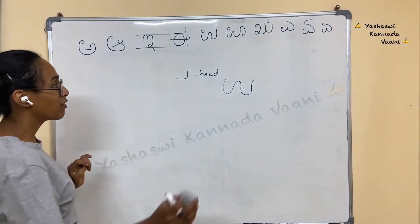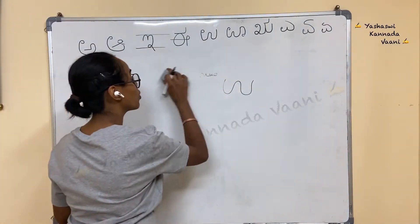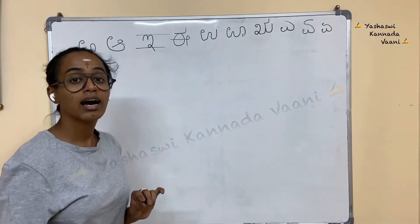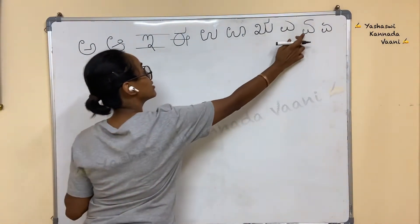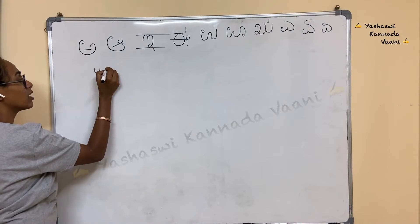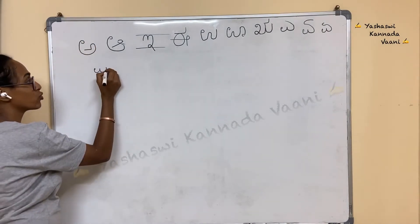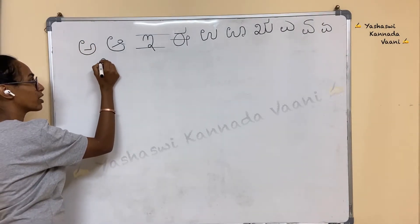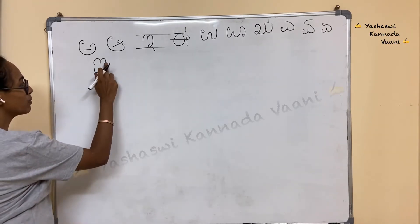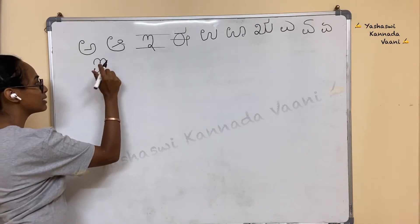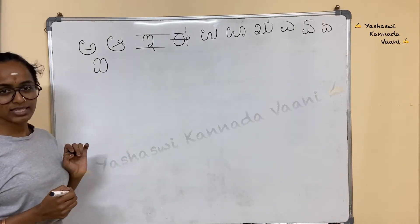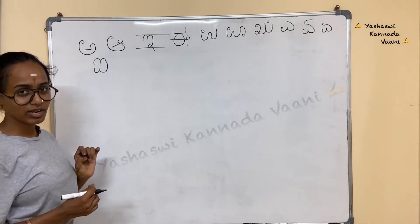Fine. Next, after A (ಏ) what do we have? After A (ಏ) we have I (ಐ). Remember this symbol — we use the same symbol. Go up now straight. Again draw 3. Okay? This should not be a straight line — it will be a little curve. Remember, you are writing a little curve here. That's it. I (ಐ).